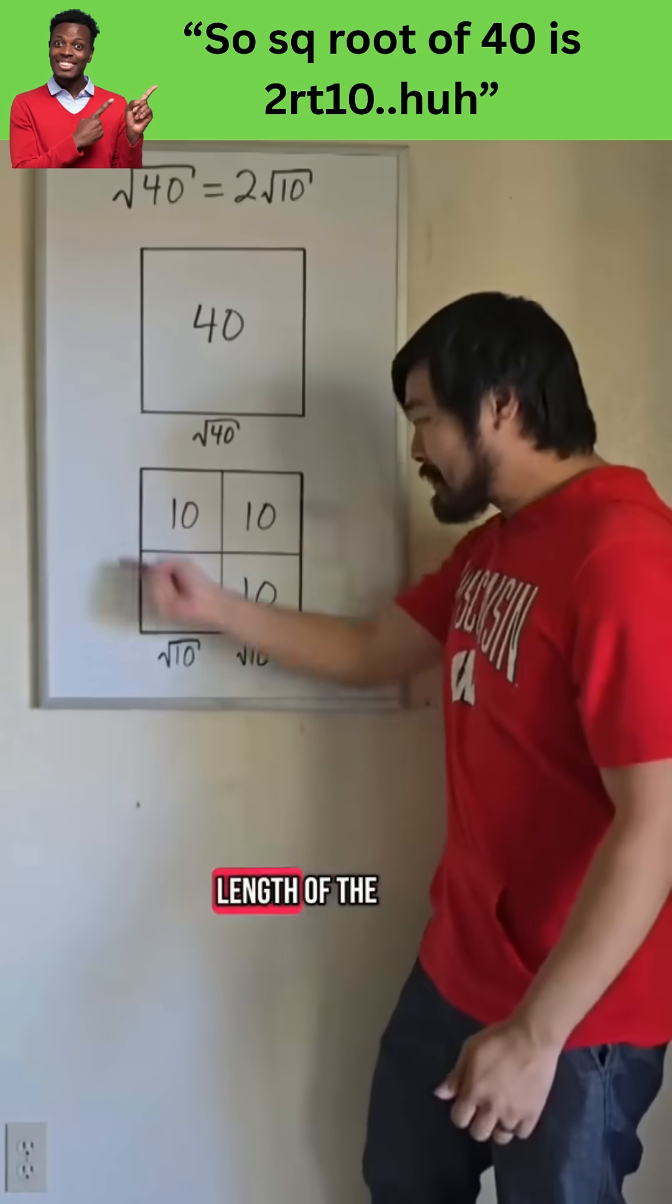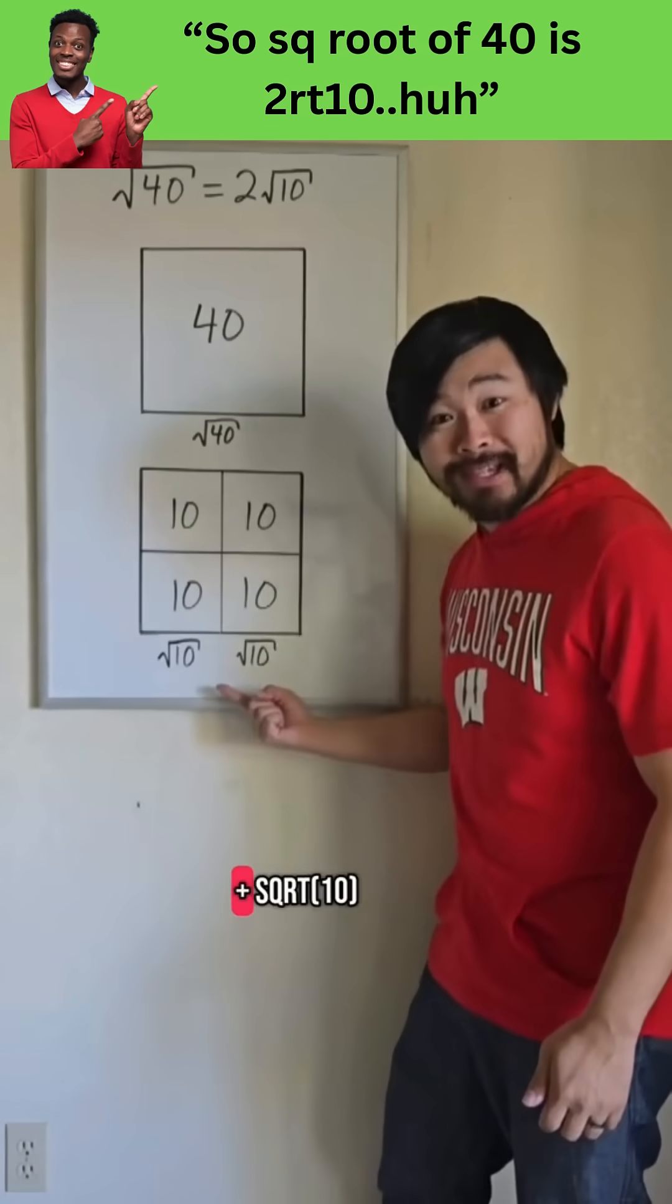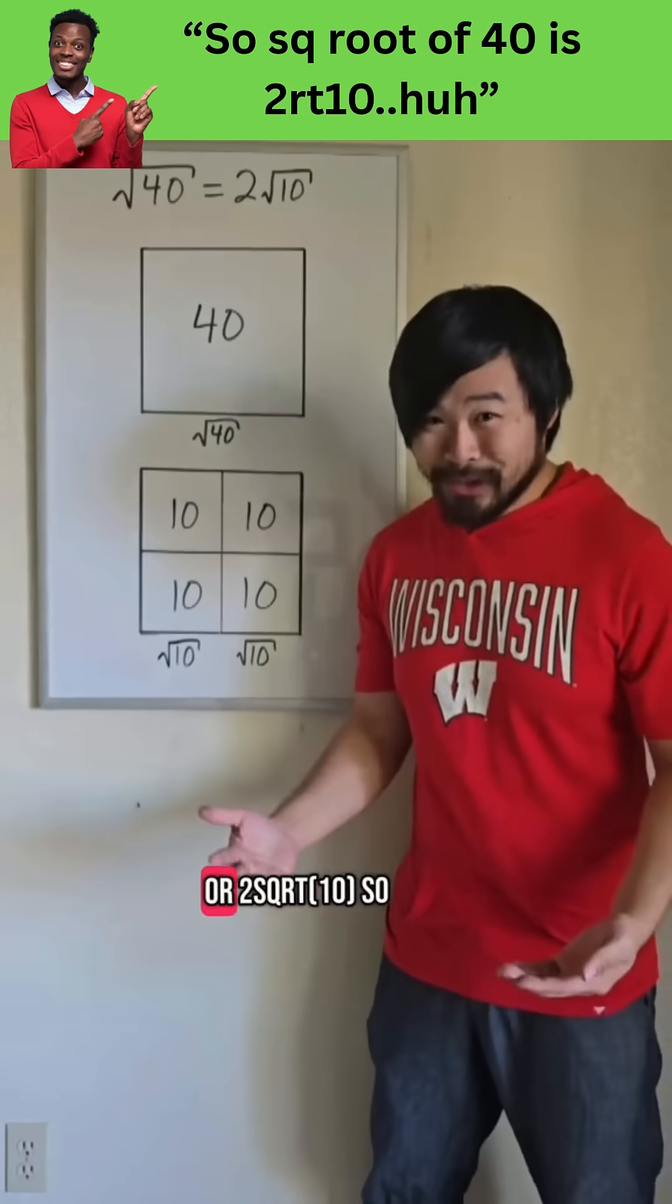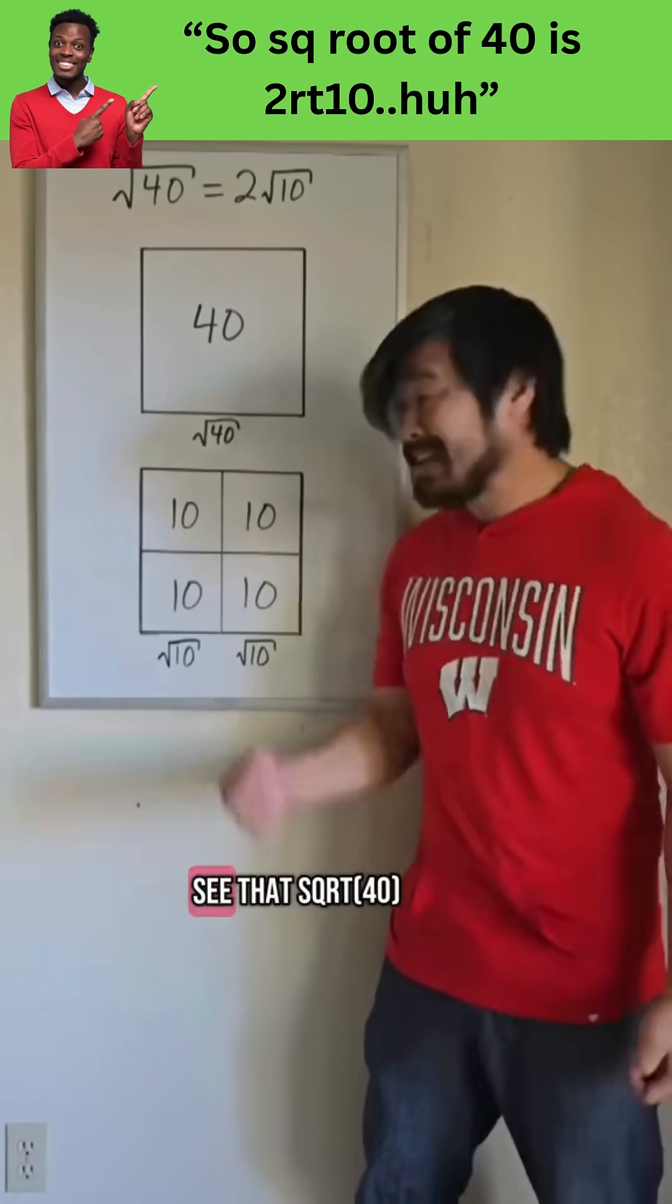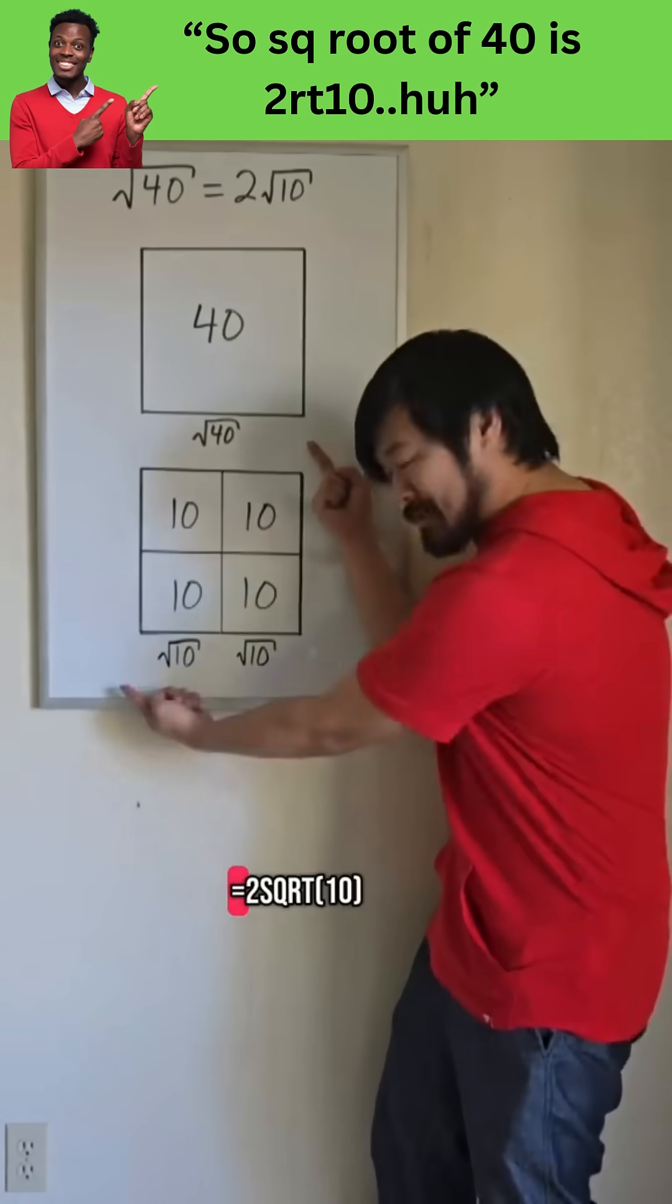So the side length of this square is the square root of 10 plus the square root of 10, or 2 root 10. So we can visually see that the square root of 40 equals 2 root 10.